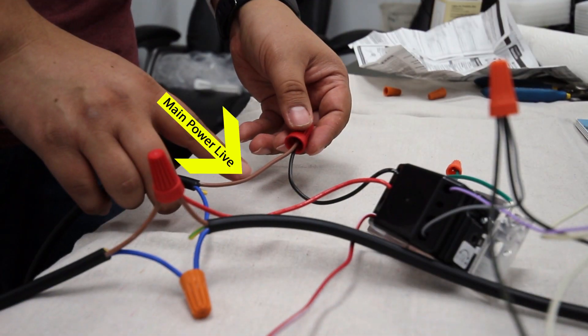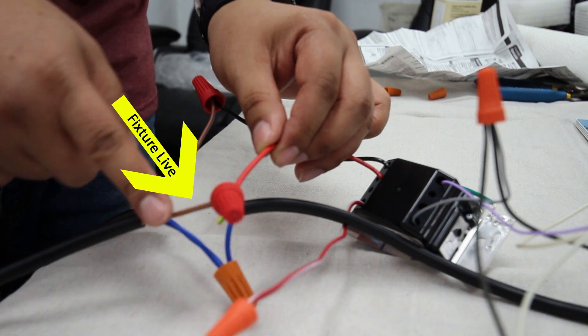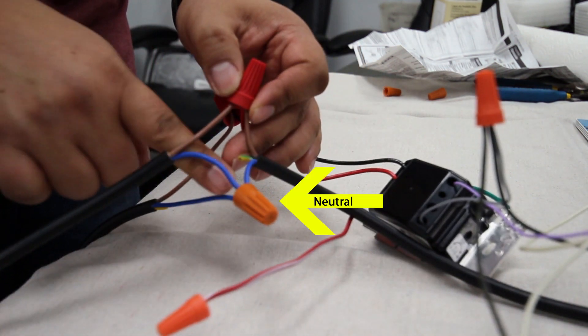So to recap, the main power's live wire, colored brown here, goes to the black wire, while the red wire connects to your fixture by the live wires. All neutral wires are tapped together.